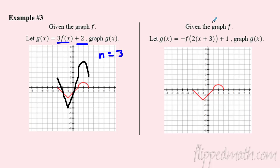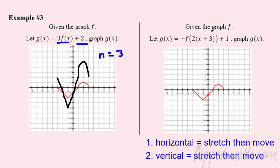Let's tackle this last complex example — it's got almost everything. The cheat code: always start with the input, the horizontal, following order of operations. Stretch before you move. Starting with a horizontal dilation — it looks like two inside, so by the opposite rule it's actually a factor of one half, meaning I shrink it horizontally. Negative three goes to negative one and a half, negative one goes to negative one half, two goes to one, and three goes to one and a half.